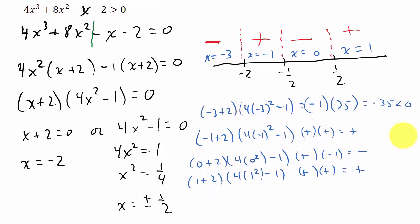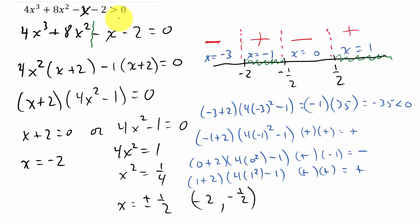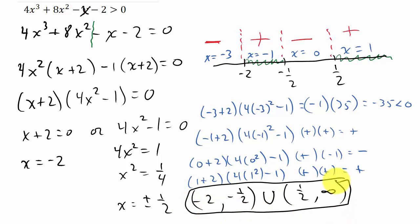We want to know when this polynomial is greater than 0 — when it's positive. It's positive in the second and fourth regions. So the solution is negative 2 to negative 1/2, union 1/2 to positive infinity, with parentheses since it's a strict inequality. That's our answer. Hope the video helped — don't forget to like and subscribe!